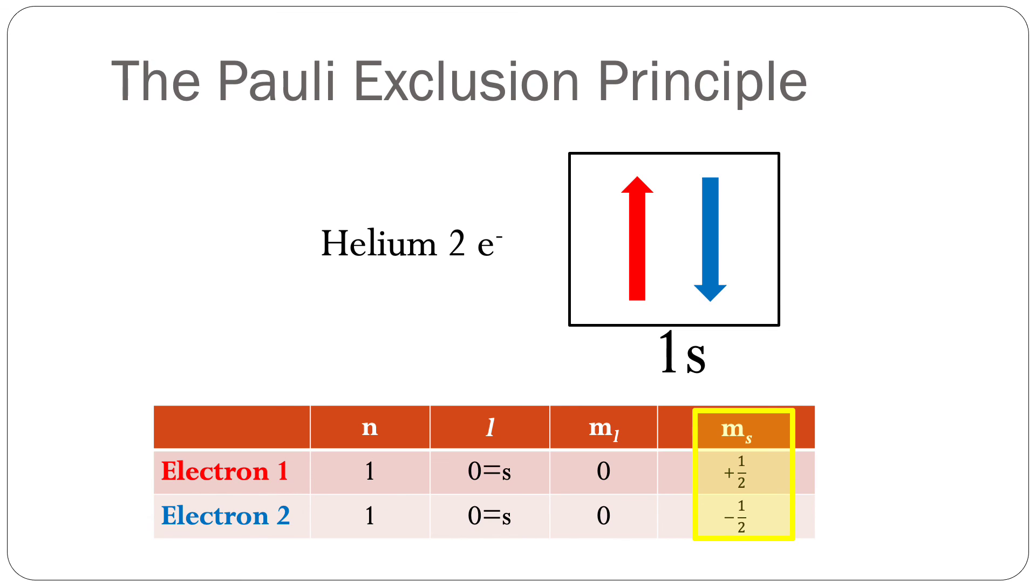Here, they are different based on their spins. The red electron is spin up, while the blue electron is spin down. The electron spin quantum numbers are plus one-half and minus one-half, respectively.